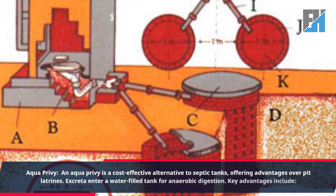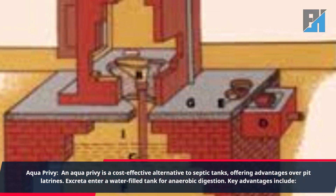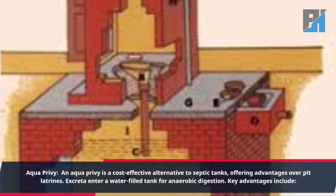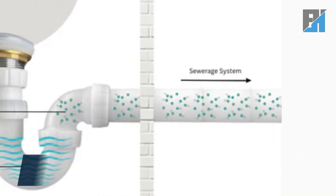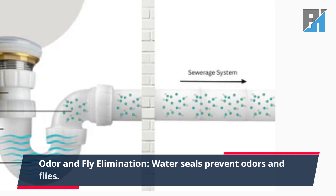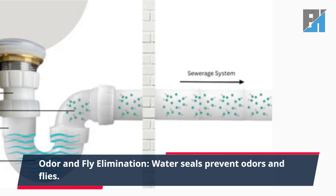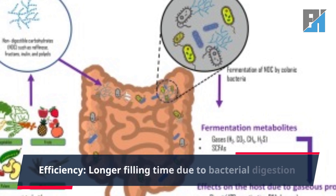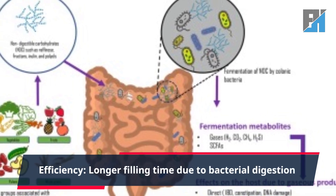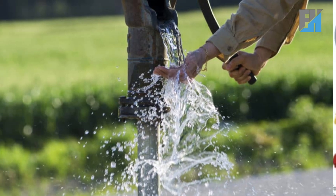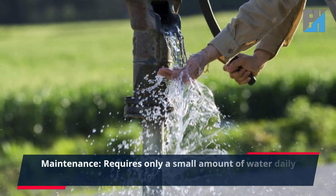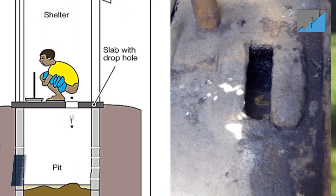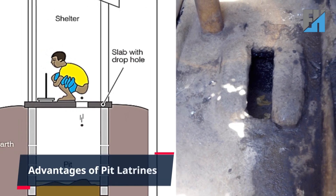Aqua privy: an aqua privy is a cost-effective alternative to septic tanks, offering advantages over pit latrines. Excreta enter a water-filled tank for anaerobic digestion. Key advantages include: one, odor and fly elimination — water seals prevent odors and flies; two, efficiency — longer filling time due to bacterial digestion; three, maintenance — requires only a small amount of water daily.